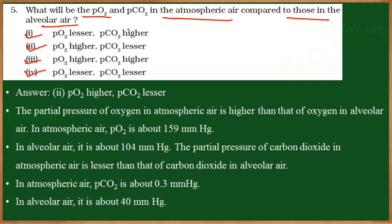In this question, they have given the partial pressure of oxygen and carbon dioxide. We need to compare whether in the atmosphere or in the alveolar which is greater and which is lesser. The answer is: the partial pressure of oxygen in the atmosphere will be more, and the partial pressure of carbon dioxide in the atmosphere will always be less when compared to the partial pressure in the alveoli.